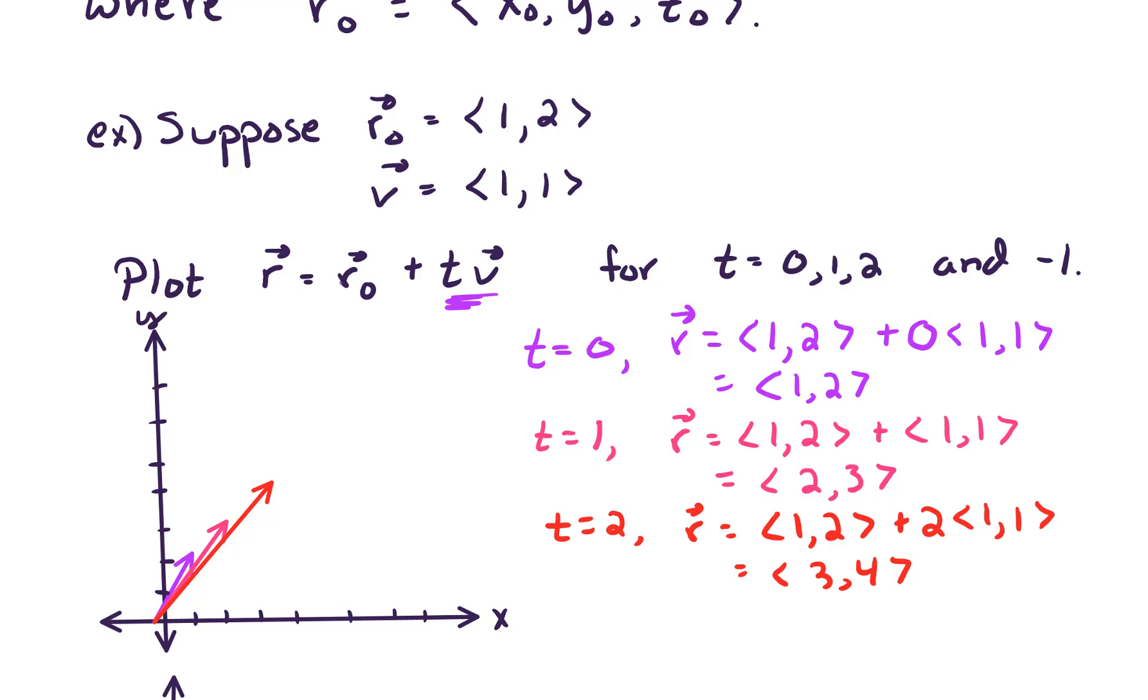And lastly, let's look at what happens when T equals negative 1. So when T equals negative 1, we have R <1,2> minus <1,1>. And that looks like <0,1>. And so if we plot that vector, that vector is just right here, starting at the origin.